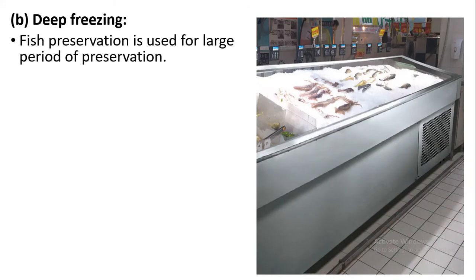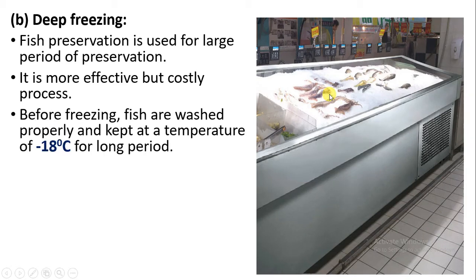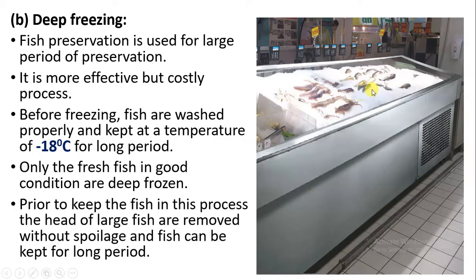The next method is deep freezing. Here the fish preservation is done for a large period of time. It is more effective but also more costly. Before freezing, the fish is first washed thoroughly and then kept at minus 18 degree Celsius for a long time. The fish is always kept fresh. Prior to deep freezing, the fish head is removed so that the spoilage process is slowed down, allowing the fish to be kept for a long period.